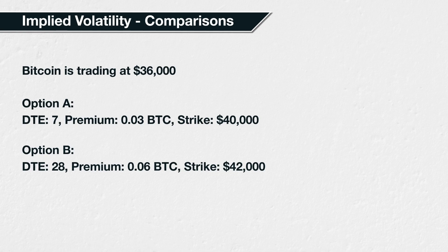We can see in absolute terms that the second option is twice as expensive as the first. With a cost of 0.03 Bitcoin, the first option has an implied volatility of about 124.4%. With a cost of 0.06 Bitcoin, the second option has an implied volatility of about 106%. As we can now see, despite being a higher absolute price, the second option is implying a lower volatility in future, and therefore may be offering more value to the buyer of that option, and less value to the seller.